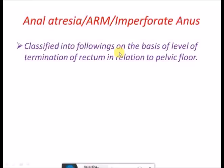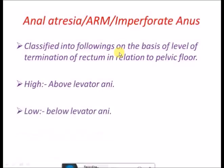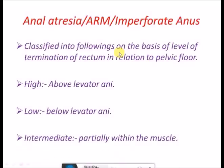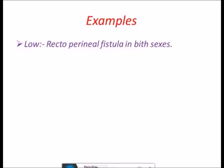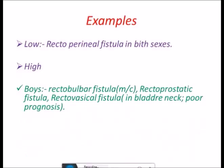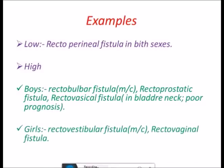Anorectal malformations are classified on the basis of the level of termination of the rectum in relation to the pelvic floor: high — above the levator ani; low — below the levator ani; and intermediate — partly within the muscle. For low ARM, it is recto-perineal fistula in both sexes. In high types, in boys the most common is recto-bulbar fistula (bulbar part of urethra), followed by recto-prostatic fistula, and least common is recto-vesicle fistula (at the bladder neck), which has a very poor prognosis. In girls, the most common high fistula is recto-vestibular fistula — not recto-vaginal.